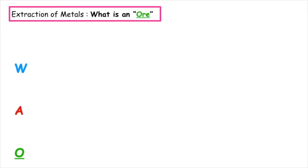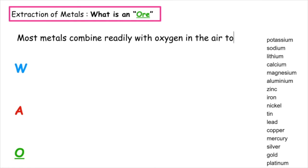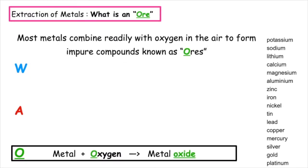So what is an ore? Most metals combine readily with oxygen in the air to form impure compounds known as ores.